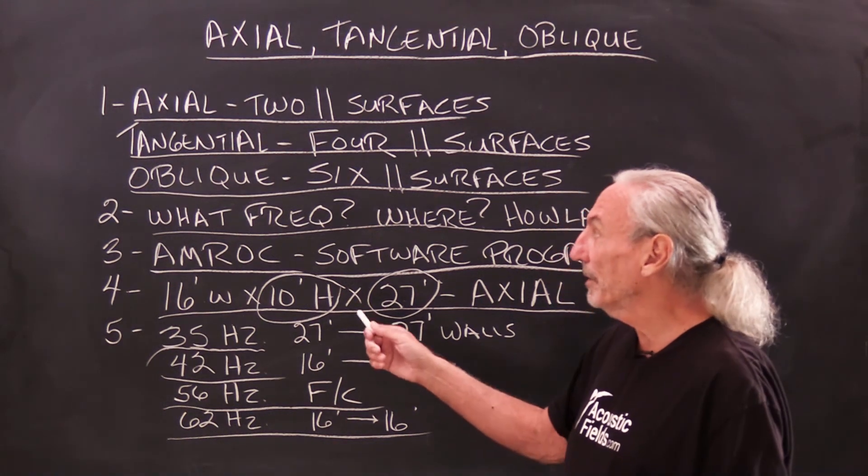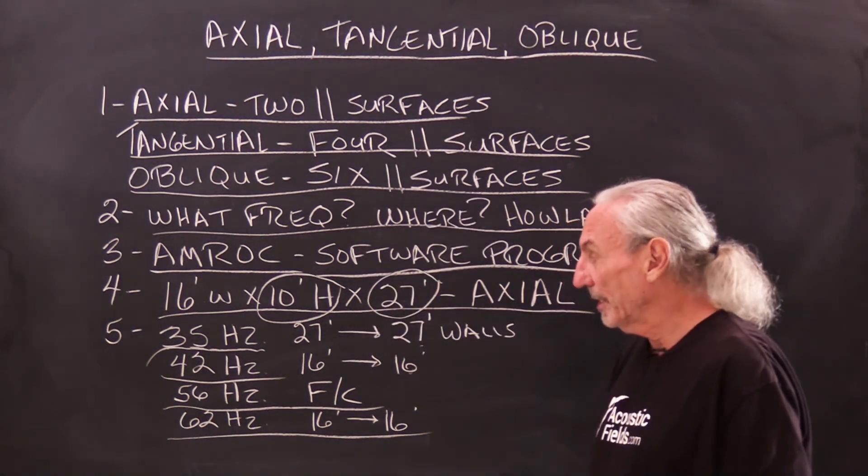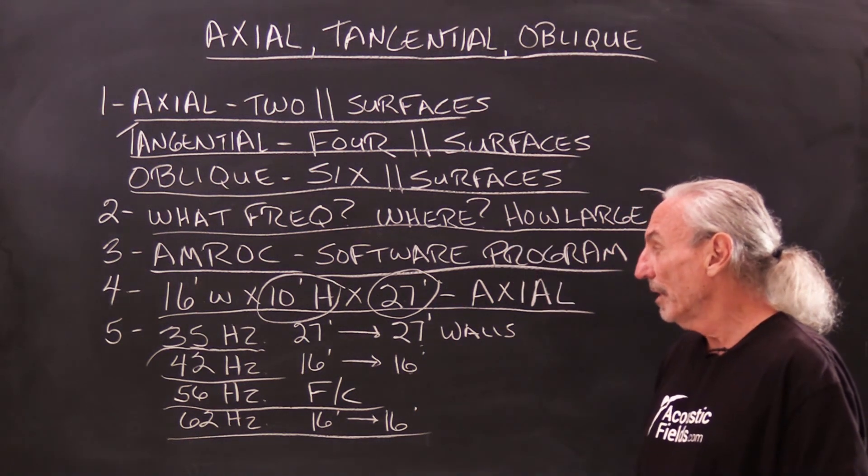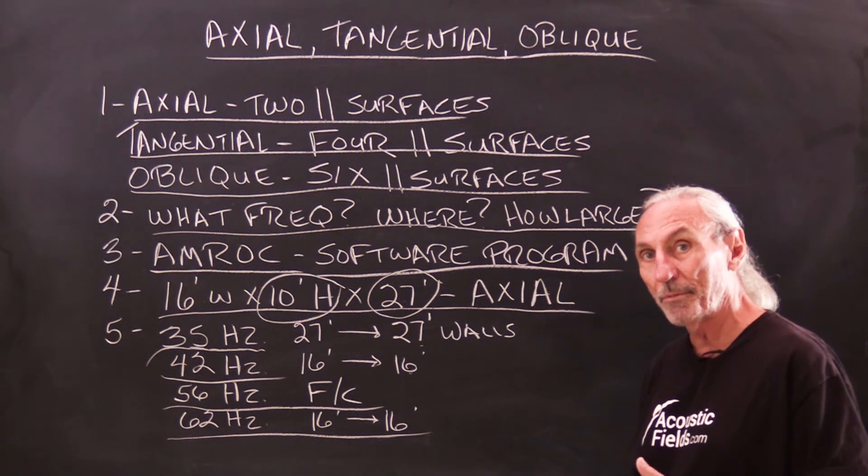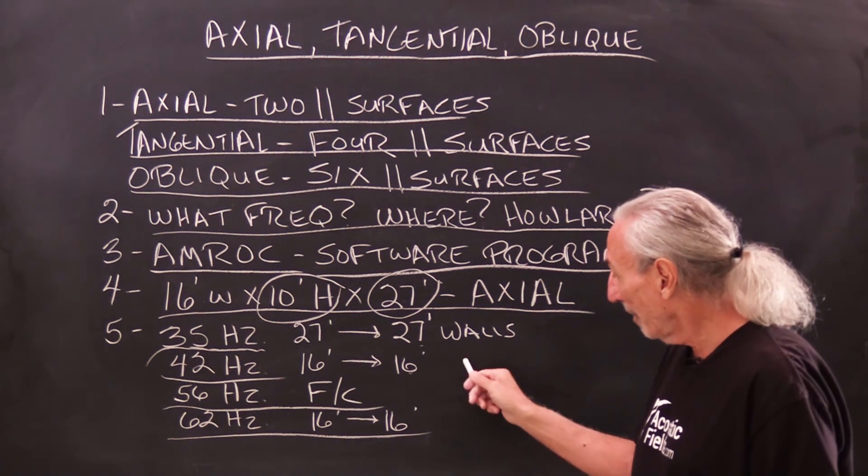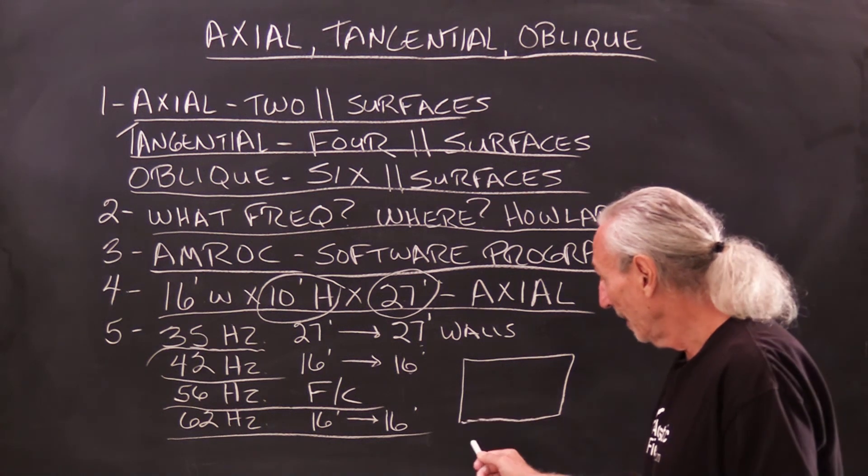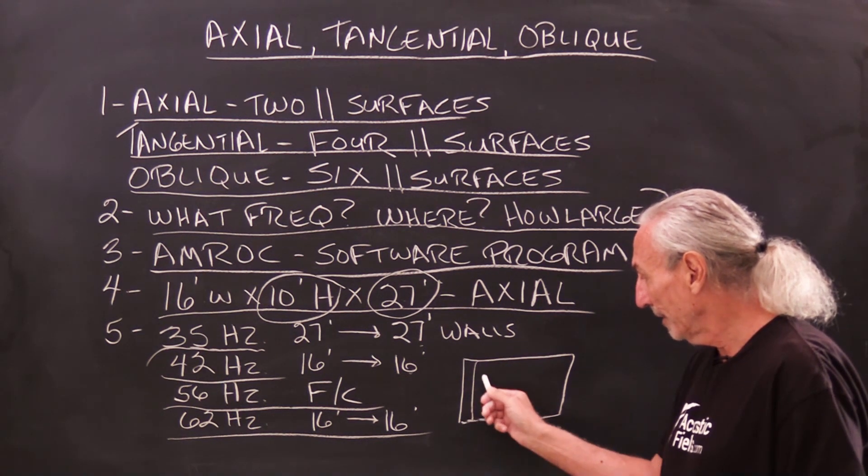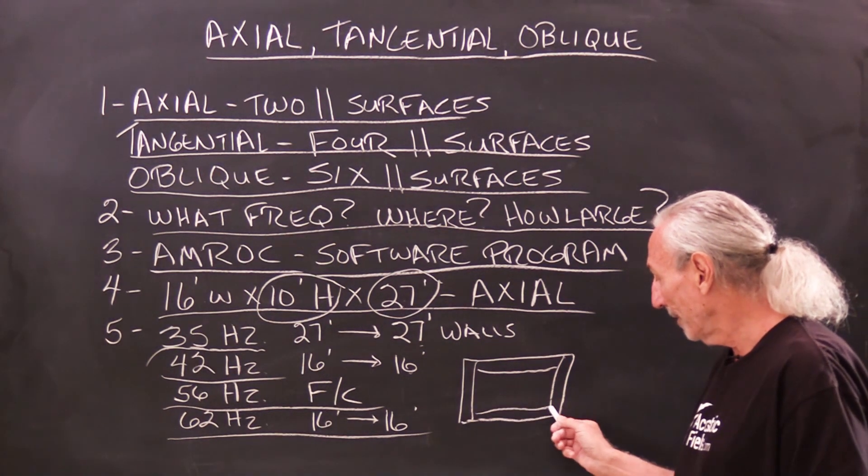So what we have to realize here is that between the two surface areas and axial modes, we have a whole distribution throughout the room of problems. That's why when we treat rooms, and I always tell people, we have to treat all the surface areas.